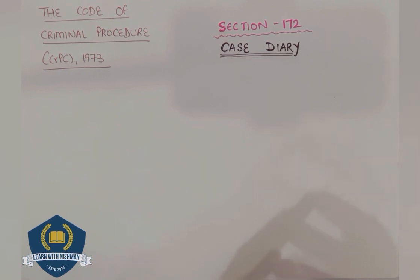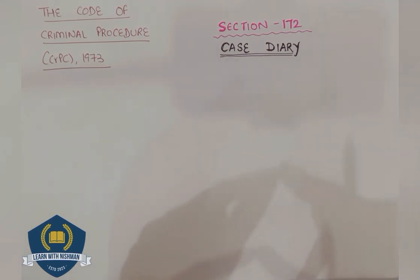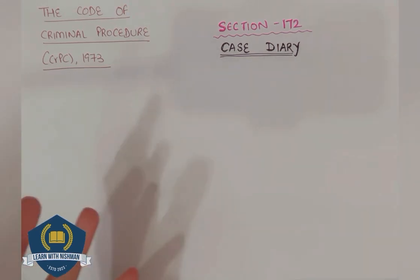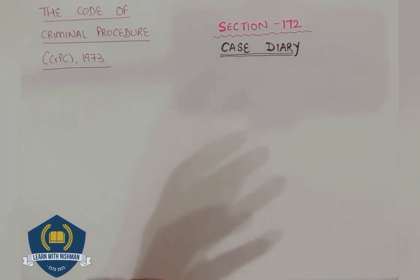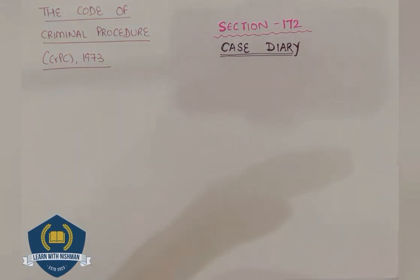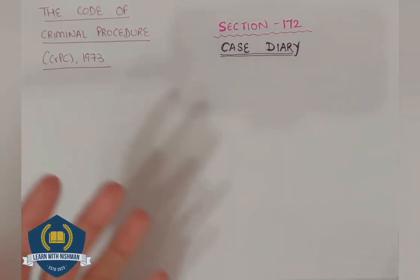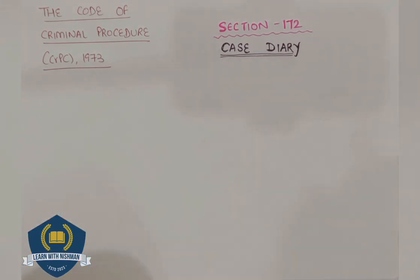For every case there is a separate diary — the Case Diary. It records the date of receiving the FIR, the crux of the FIR, examination of witnesses including time and place. If a raid was conducted, the time, place, persons involved, seizure memo, and documents seized are all recorded. If there is an arrest, the arrest memo is included.